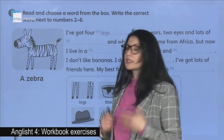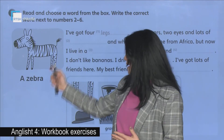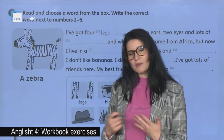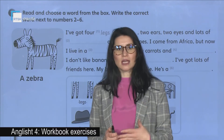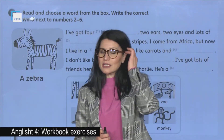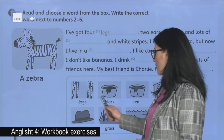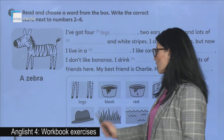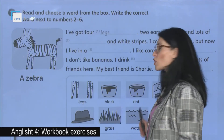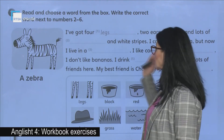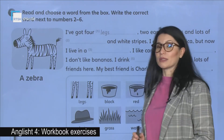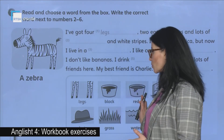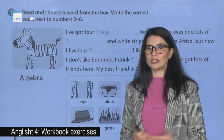We have got here another exercise. We've got a text about a zebra, but there are some omitted words. We have got the words: legs, black, red, zoo, hat, grass, water, and monkey. But be careful — not all the words are necessary for us. Pra, duhet të kemi kujdes, sepse nuk do të na nevojiten të gjitha fjalët.